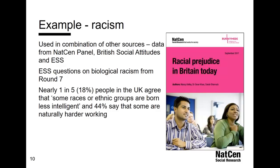The second example is on attitudes to racism, drawing on several data sources including the British Social Attitudes survey as well as ESS round seven data on biological racism. This focused entirely on the UK. One key finding was that nearly a fifth of people in the UK agreed with the statement that some races or ethnic groups are born less intelligent — demonstrating the extent of racial prejudice in Britain. This is an example of using one detailed module to look in depth at one particular topic in one particular country.